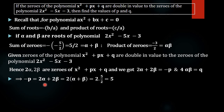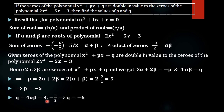Then minus p equals 2 alpha plus 2 beta equals 2 into (alpha + beta) equals 2 into 5 by 2 equals 5. So minus p equals 5, which gives p equals minus 5. Then q equals 4 alpha beta equals 4 into (minus 3 by 2) — the 4 and 2 cancel — giving 2 into minus 3, which equals minus 6.